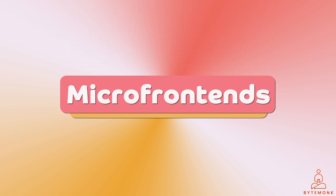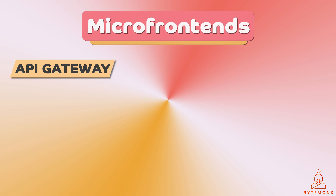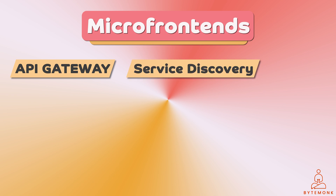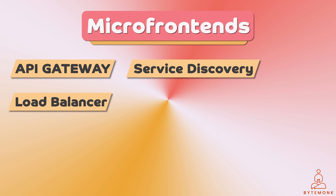Many patterns used in microservices can also be applied to microfrontends. An API gateway is a single point of entry for all requests to microservices or microfrontends and can help improve security and performance. Service discovery is a way for MFEs to find each other. Load balancing distributes traffic across multiple MFEs. A circuit breaker protects MFEs from cascading failures — if one microfrontend fails, the circuit breaker stops traffic from flowing into it, preventing the failure from affecting the rest of the application. Health checks monitor the health of MFEs to identify problems before they cause outages.